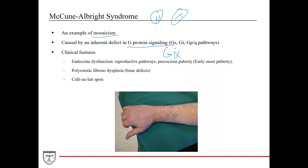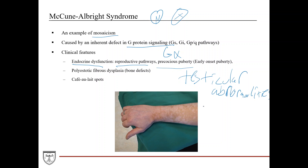G-proteins are involved in numerous processes across all organ systems, so these patients can have a variety of symptoms depending on severity. Classic symptoms include endocrine dysfunction, because G-protein signaling is huge in endocrine function. Along reproductive pathways, they can develop precocious puberty — early-onset puberty — and some patients can have testicular abnormalities, hyperthyroidism, or excess growth hormone. Which symptoms appear depends on which cell population is specifically affected, and typically only one or two will be present.